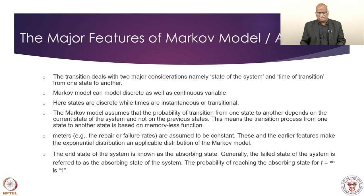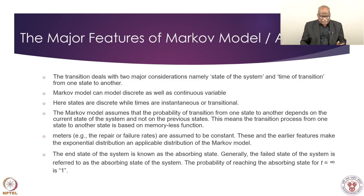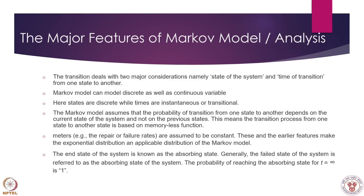The Markov model is memoryless. The transition from one state to another is based on this memoryless property — the previous state determines the next step, and before that there is no memory. Failure rates and repair rates are assumed to be constant; the exponential distribution is at the core of the Markov model. The end state of the system is known as the absorbing state, though with repair, return to the operating state is possible in real-time scenarios.